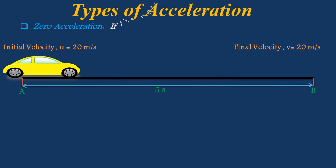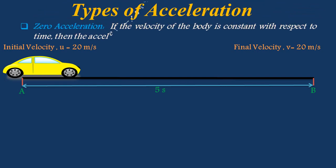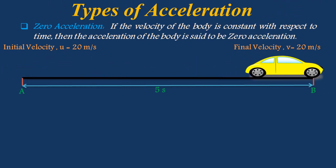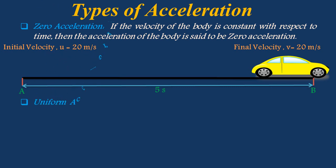If the velocity of the body is constant with respect to time, then the acceleration of the body is said to be zero acceleration. Consider a car moving initially with a velocity of 20 meter per second that takes 5 seconds to reach the final point with a constant velocity of 20 meter per second. Then acceleration is said to be zero acceleration, as there is no change in velocity.